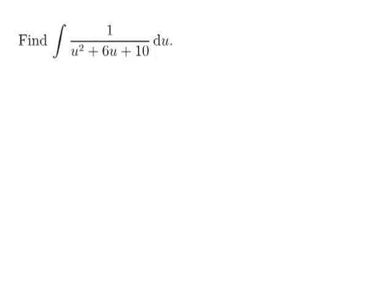Find the integral of 1 over u squared plus 6u plus 10 du. So it's got a squared in the denominator. The only thing I know how to do straight off that has a squared in the denominator is arctan. It would be 1 over 1 plus x squared.